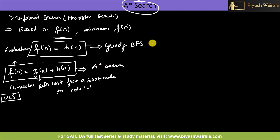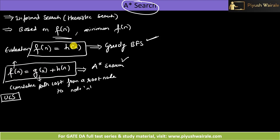Please note this important point: in greedy best-first search, the evaluation function equals h(n) — the heuristic function only. In A* search, the evaluation function equals g(n) + h(n). We have discussed the heuristic function in the previous lecture; you can watch that lecture. Now let us discuss how A* search works with an example.